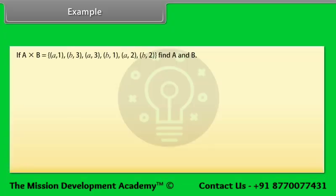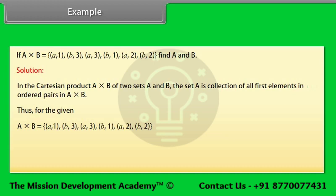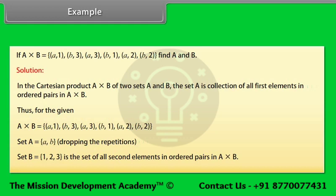Example: If A × B = {(a,1), (b,3), (a,3), (b,1), (a,2), (b,2)}, find A and B. Solution: In the Cartesian product A × B, set A is the collection of all first elements. Thus, A = {a, b} (dropping repetitions), and set B = {1, 2, 3} is the set of all second elements in the ordered pairs.